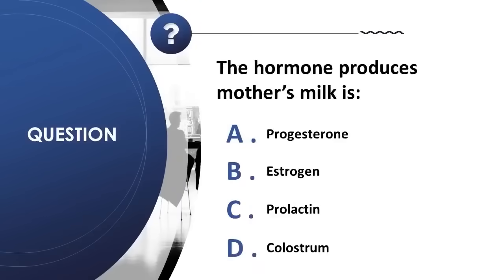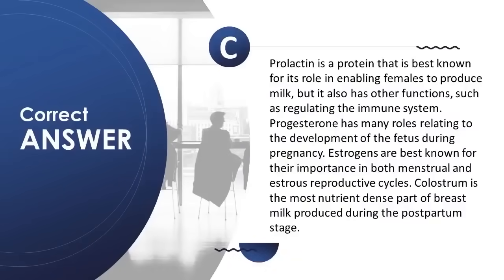Question 35: The hormone that produces mother's milk is: A) progesterone, B) estrogen, C) prolactin, D) colostrum. Correct answer is C. Prolactin is a protein best known for enabling females to produce milk but also regulates the immune system. Progesterone has roles in fetal development. Estrogens are important in menstrual and estrous reproductive cycles. Colostrum is the most nutrient-dense part of breast milk produced during the postpartum stage.